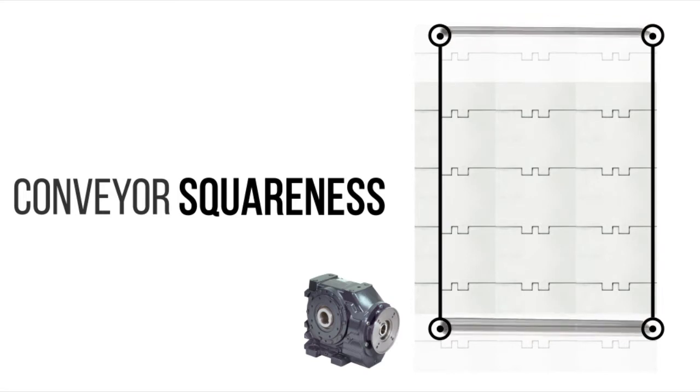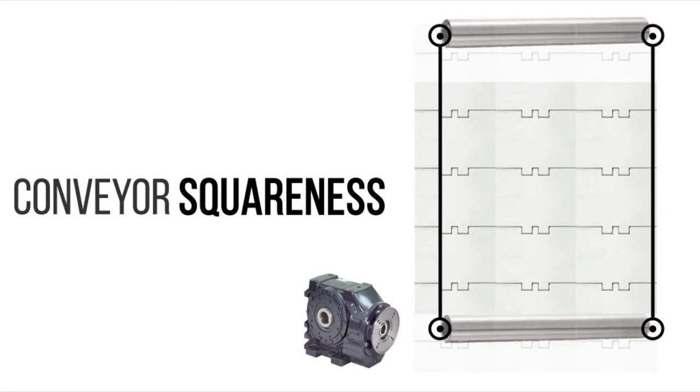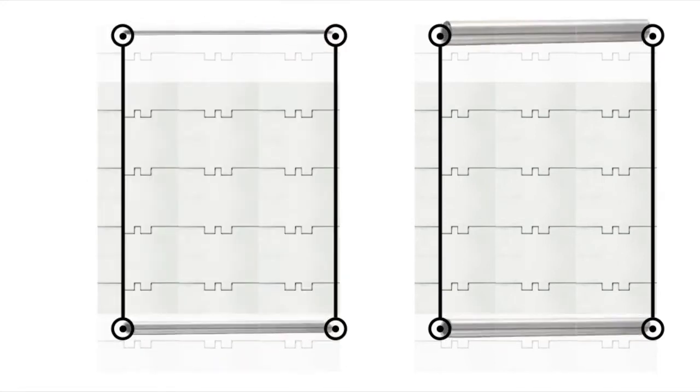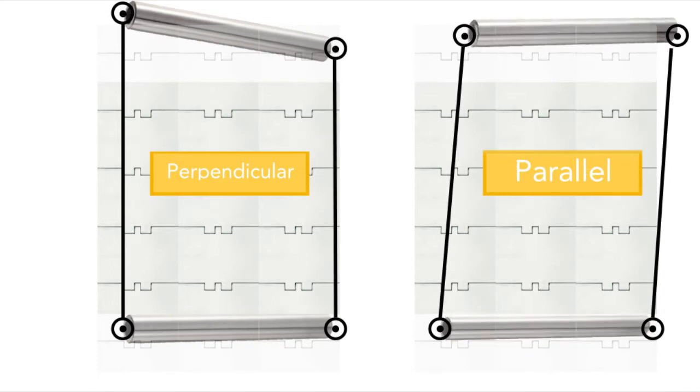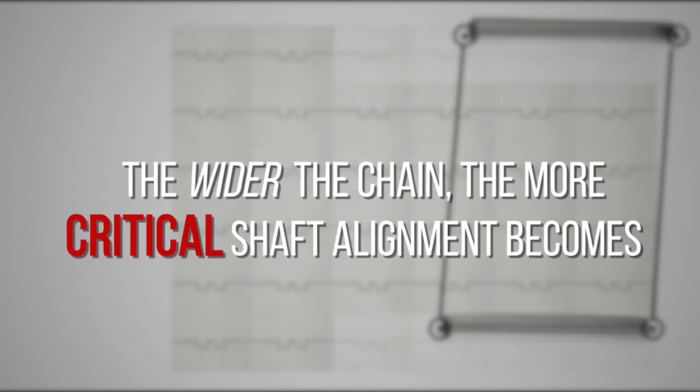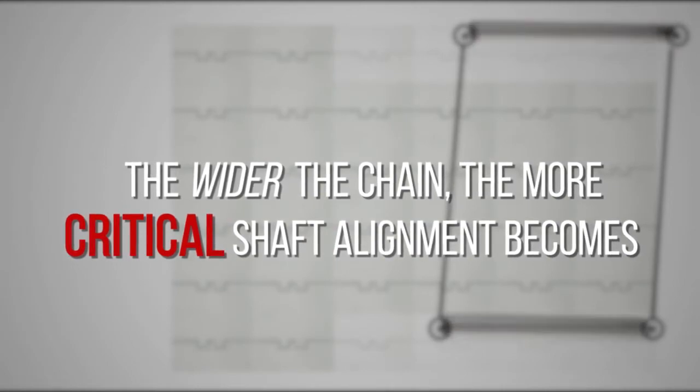The term squareness refers to the alignment of the drive and tail shafts of a conveyor. Many chain issues can arise from a misalignment of the shafts. The wider mat top chains are assembled, the more critical to the performance of the chain the shaft alignment will become.